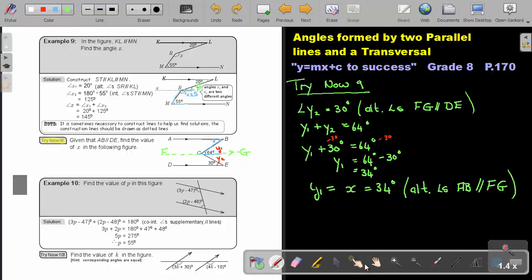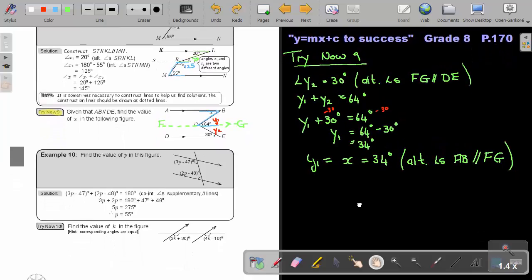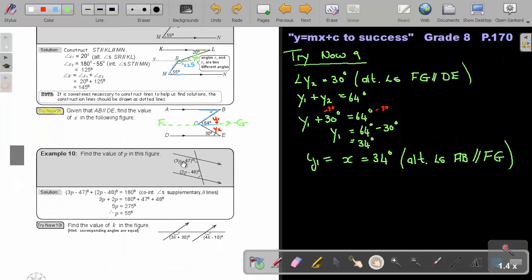I think we're going to continue with example 10. In this case, it's an algebraic expression here, but I use exactly the same rules. Find the value of P. If you look here, remember that line is parallel. What do you see? You see a C. So, these angles, what will they be? Supplementary. That means they will add up to 180. So, this angle plus this angle will add up to 180.